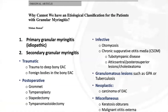Granular myringitis is by definition idiopathic and occurs in the absence of middle ear disease or systemic ear disease. More recently, Banzal challenged this and attempted to reclassify it into primary and secondary forms — the primary form referring to idiopathic disease, and the secondary form to granulation tissue on the tympanic membrane secondary to other causes. However, this classification is far from universal acceptance.